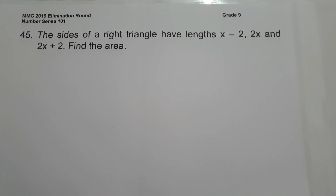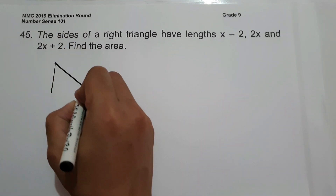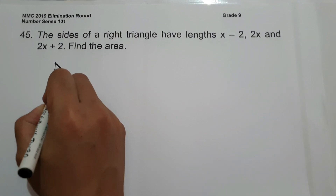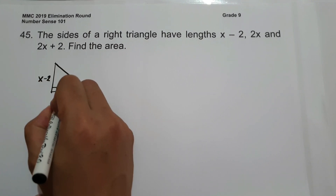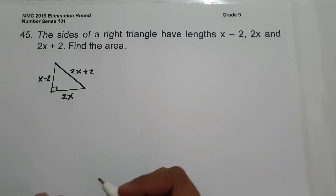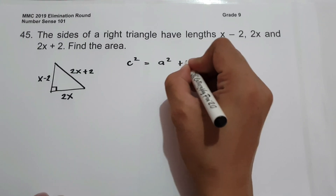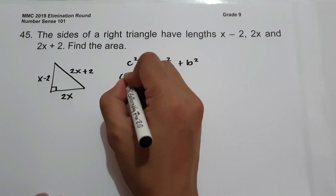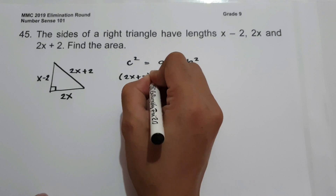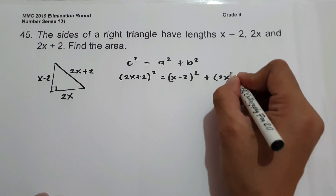On number 45, the sides of a right triangle have lengths x minus 2, 2x, and 2x plus 2. We are going to find the area. Let us illustrate the given: the right angle is marked, with sides x minus 2, 2x, and 2x plus 2. To find the area, we will use the Pythagorean theorem: c squared equals a squared plus b squared, where c is 2x plus 2 (the hypotenuse), a is x minus 2, and b is 2x.